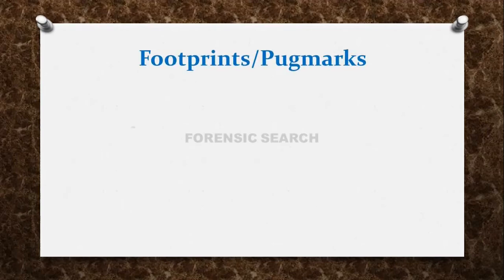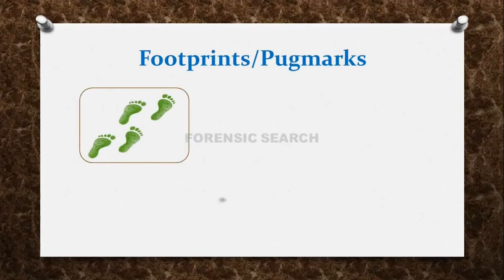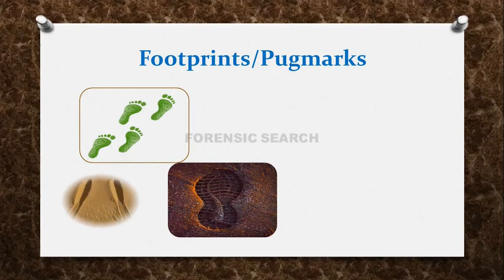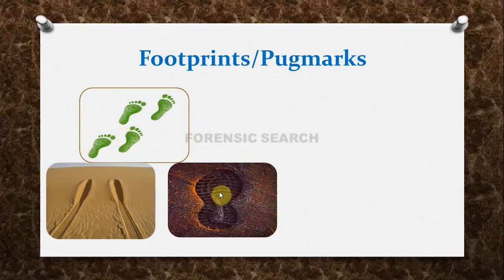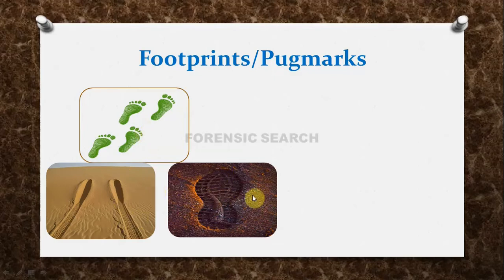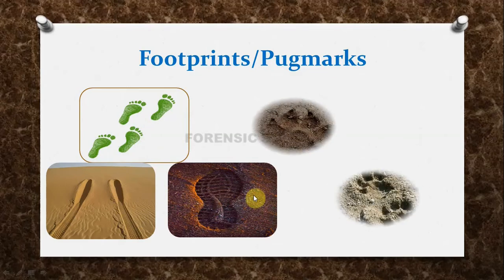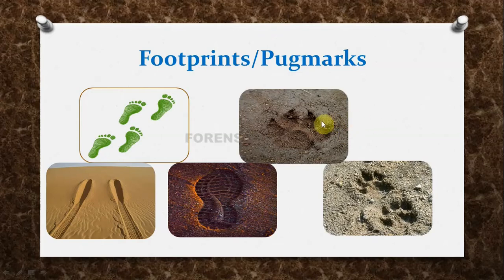Let us see what footprints or Pugmarks look like. For example, the footprint of a human being is unique. Or suppose there is a vehicle, it has a tire mark. Likewise, just as humans leave footprints and vehicles leave tire marks, in the same way, large wild animals have footprints which we call Pugmarks.